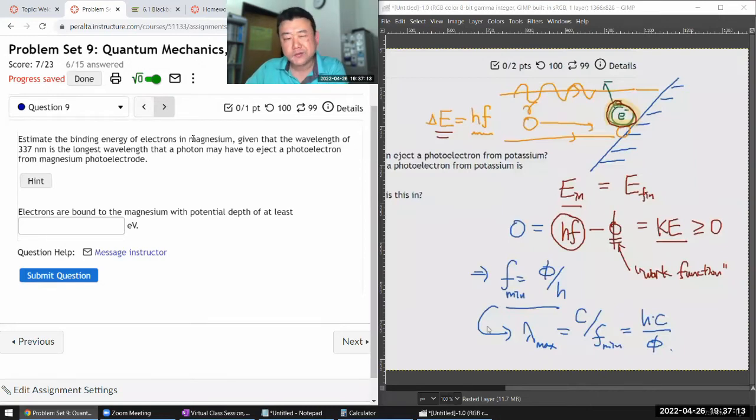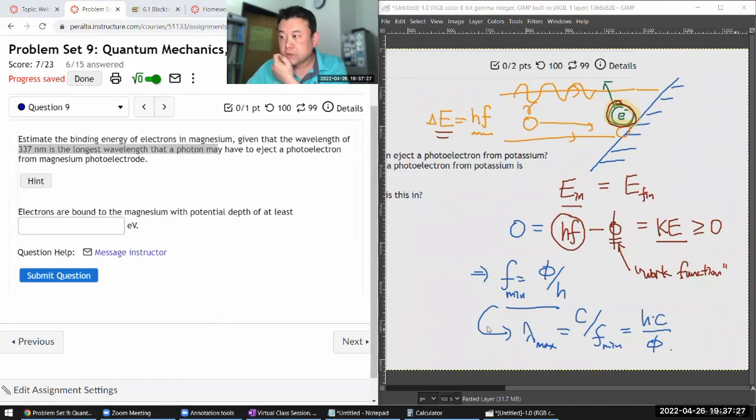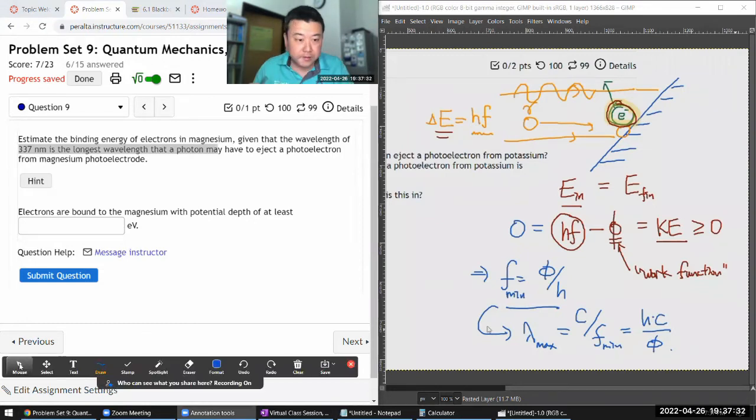So this question asks, estimate the binding energy of electrons in magnesium, given that the wavelength - this is going to give us the threshold frequency for the photon. So this is the frequency at which we are going to have... I guess I actually already worked out the longest wavelength, the maximum wavelength that ejects an electron is related to the work function by this. So let me just solve that for the work function.